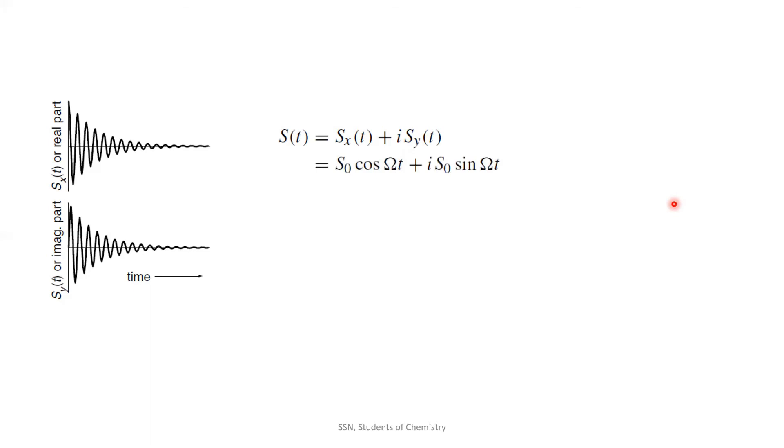But by Euler's formula, exponential of I theta is equal to cos theta plus I sine theta. Hence, by taking S naught out as common, cos omega T plus I sine omega T, cos omega T plus I sine omega T will become as S naught into exponential of I omega T.